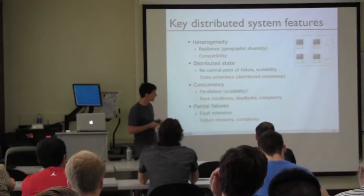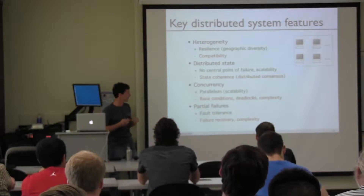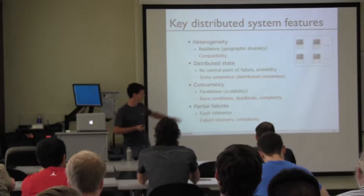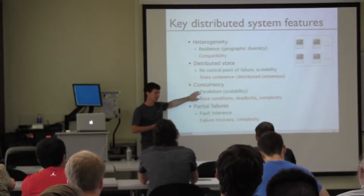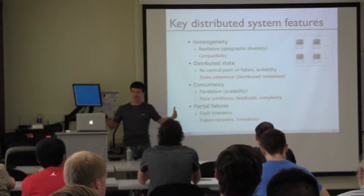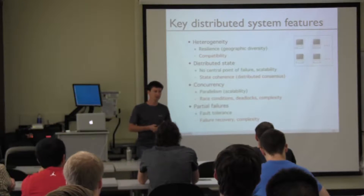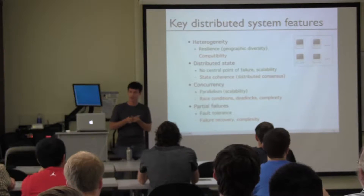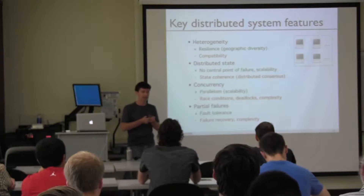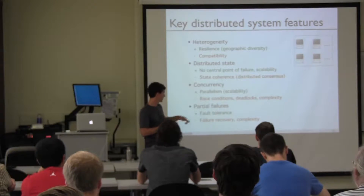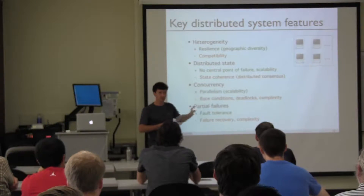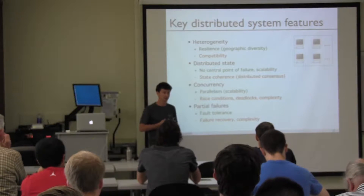Another feature is concurrency. This is how we get parallelism — how we make these systems scale out. If I add one more machine to the system, I get one more worker, one more thread of execution, so I get to do more tasks. On the other hand, there are numerous challenges having to do with concurrency, like race conditions, deadlocks, and the complexity of just trying to engineer the system.